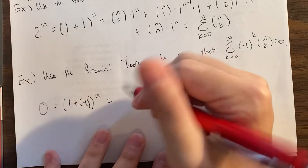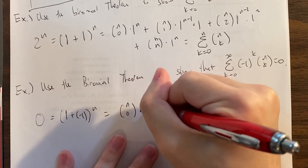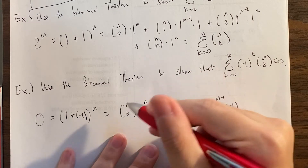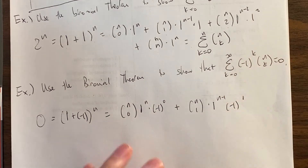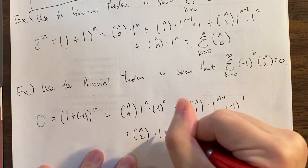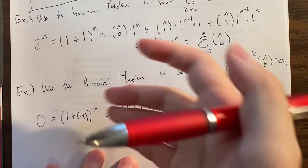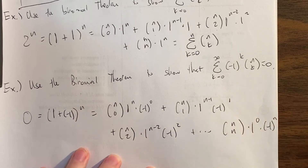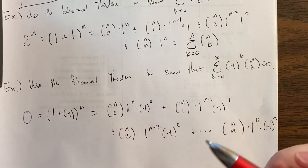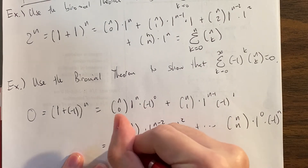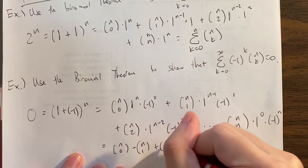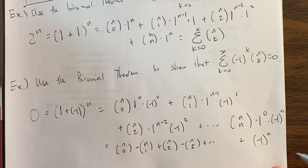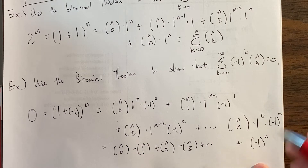Let's apply the binomial theorem with x = 1 and y = negative 1. It's going to be n choose 0 times 1 to the n times (negative 1) to the 0, plus n choose 1 times 1 to the n minus 1 times (negative 1). The first term is positive because it's (negative 1) to the 0; the second term is negative because it's negative 1. Then plus n choose 2 times 1 to the n minus 2 times (negative 1) squared — so it alternates positive, negative, positive — all the way down to n choose n times 1 to the 0 times (negative 1) to the n.